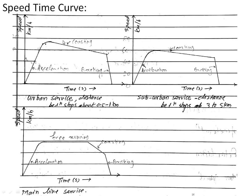This diagram shows the various speed-time curves for urban, suburban, and mainline services. As seen in the comparative table: there is no free running period in both urban and suburban services. The coasting period is less in urban service as compared to suburban service, while the coasting period is longer in suburban service. In mainline service, there is free running, coasting, and braking.